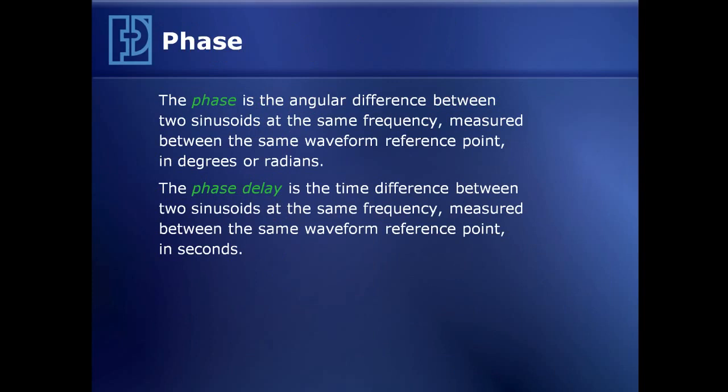Phase is the angular difference between two sinusoids that are at the same frequency, measured between a reference point. It's usually expressed in degrees or radians. Phase delay, on the other hand, is the time difference between two sinusoids at the same frequency, measured at the same reference point on their waveforms. So phase is in degrees; phase delay is in seconds.